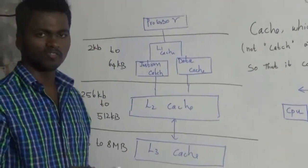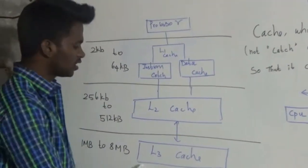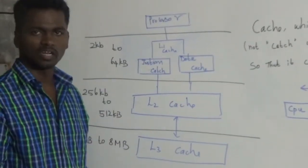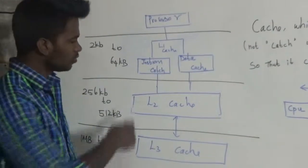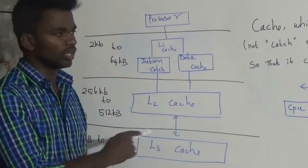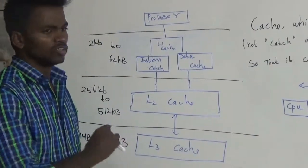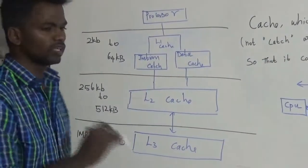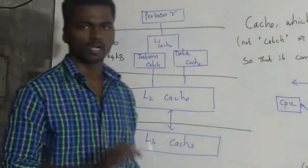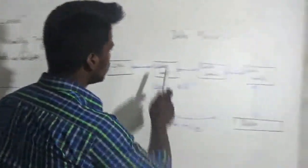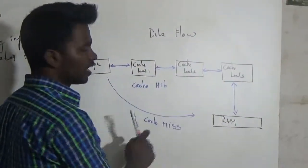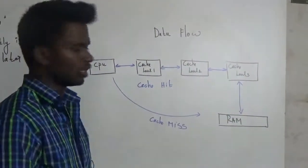The L1 cache is inbuilt and the L2 cache is inbuilt into the processor. The L3 cache is also inbuilt. In cache memory, the data flow is managed internally. That is how the data flows through the cache memory.